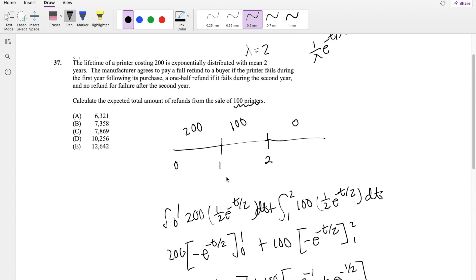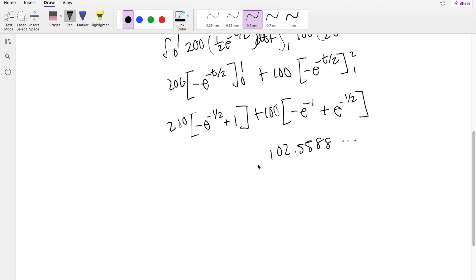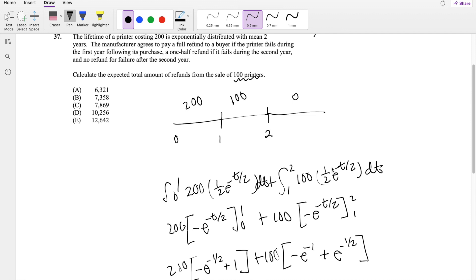But we know that there are actually 100 of these printers, so we just have to multiply this by 100. So then you get 10,255.89, which is approximately equal to 10,256, our answer D.